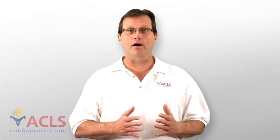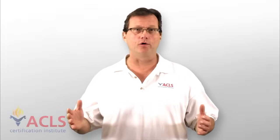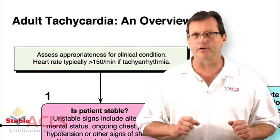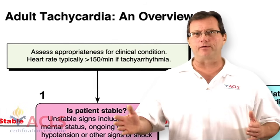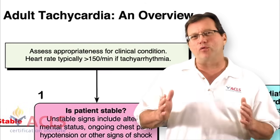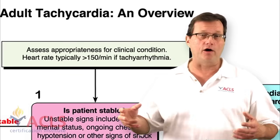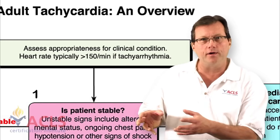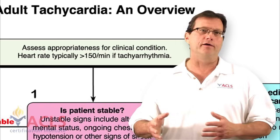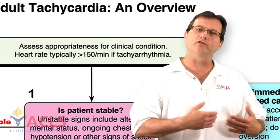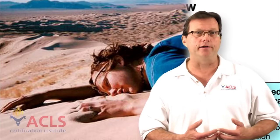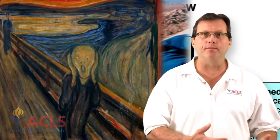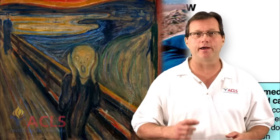Now remember, a tachycardia is any ventricular rate over 100. 150 is the magic number in ACLS. When a tachycardia hits 150 or greater, there's a greater chance that it is caused by a true heart problem. If the tachycardia is less than 150, it may be caused by something else — dehydration, anxiety, some other cause other than a primary cardiac event.